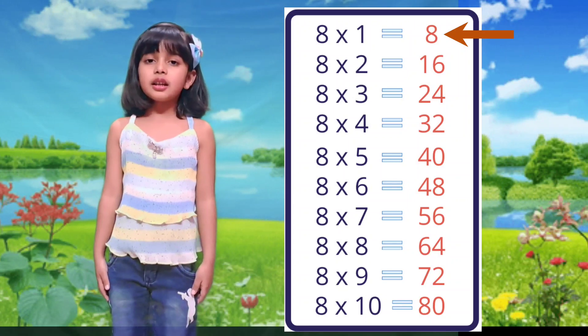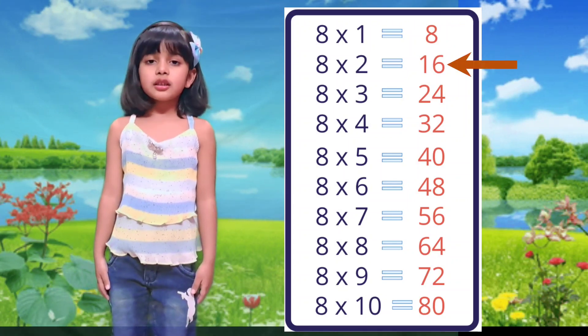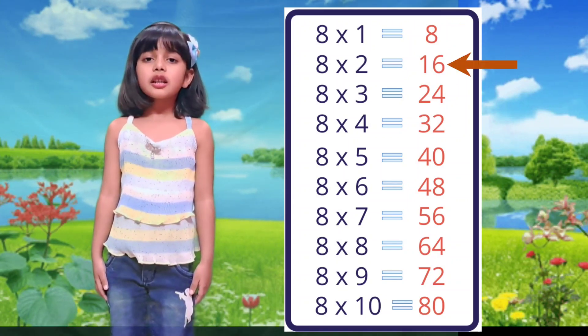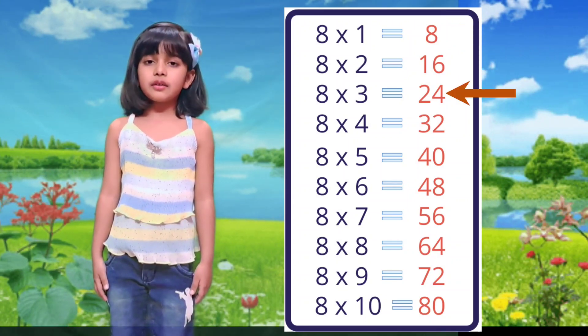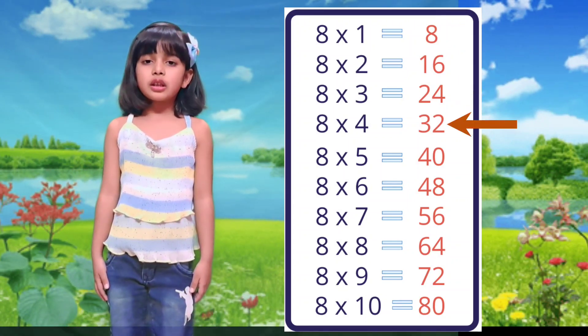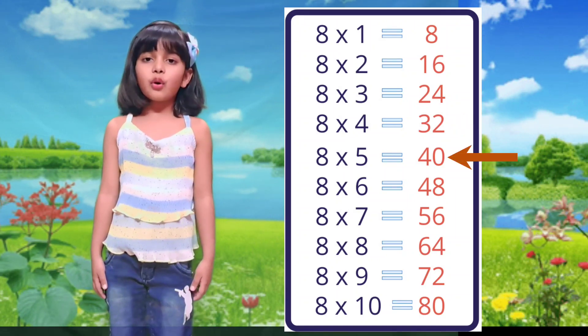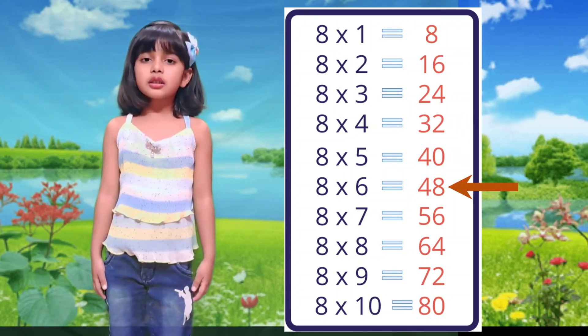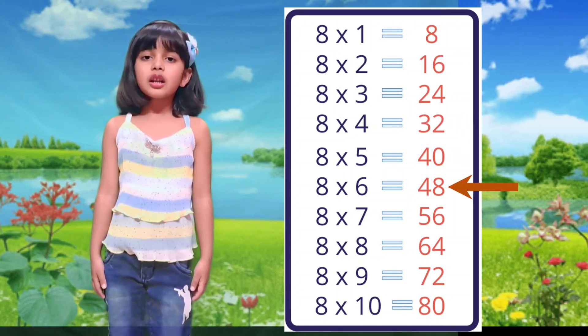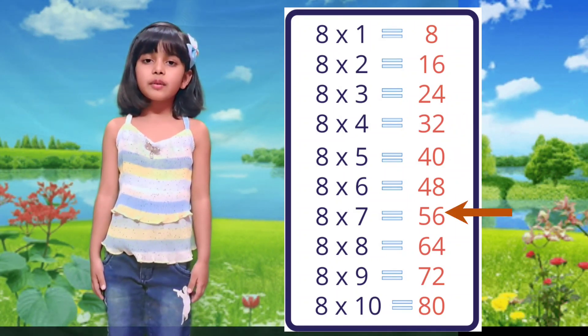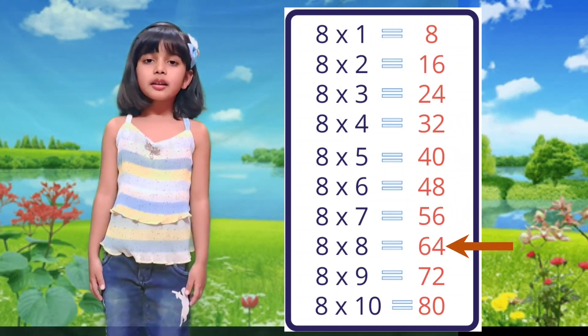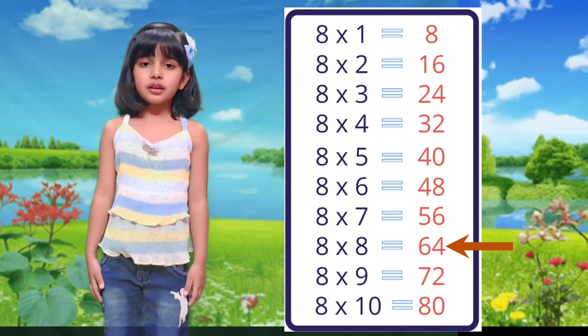Table of 8. 8×1 is 8, 8×2 is 16, 8×3 is 24, 8×4 is 32, 8×5 is 40, 8×6 is 48, 8×7 is 56, 8×8 is 64.